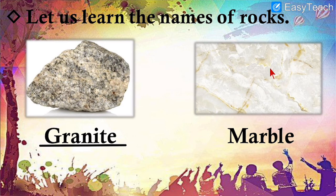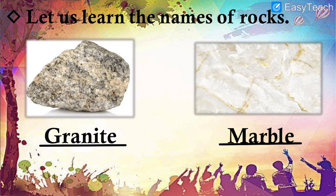The second rock — have you seen this kind of rock anywhere? Yes, you have seen it. Try to remember where. On the floor! The name is M-A-R-B-L-E — Marble. So these are two rocks of different types, also used for different purposes. This one is granite, this one is marble.